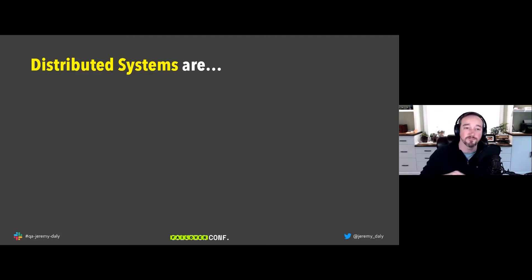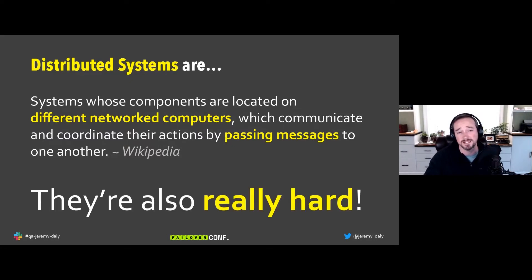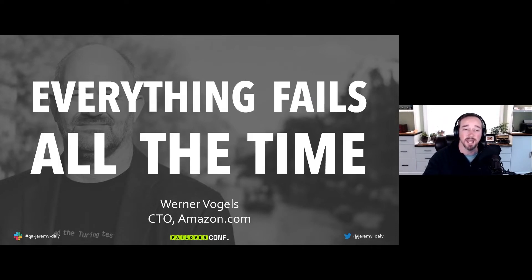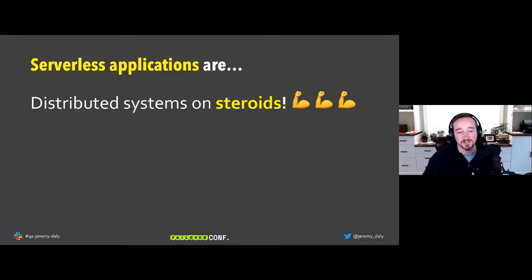Distributed systems are just a bunch of different networked computers that need to pass messages back and forth in order for the system to achieve some goal. They are really, really hard — if someone tells you it's easy, they're definitely missing something. As Warner Vogels, CTO at Amazon, famously says: everything fails all the time. This is particularly true with distributed systems.